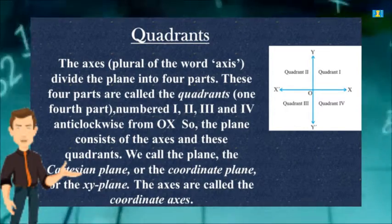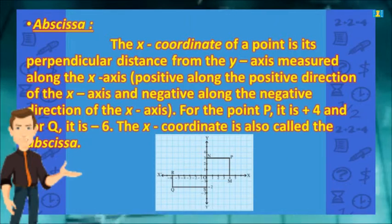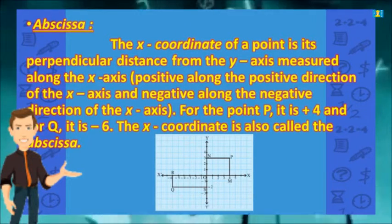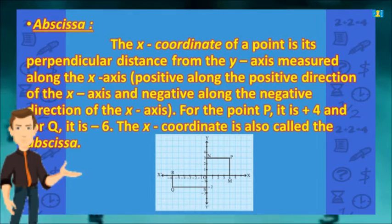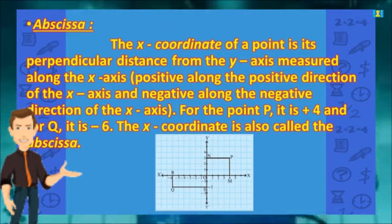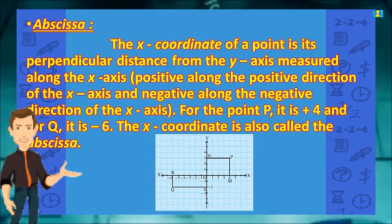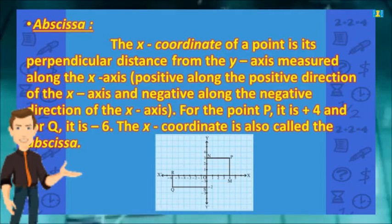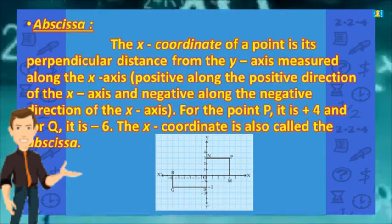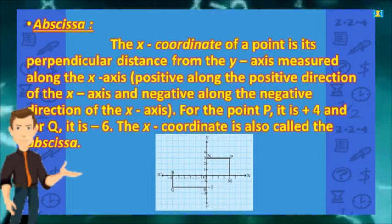The x-coordinate of a point is its perpendicular distance from the y-axis, measured along the x-axis — positive along the positive direction of the x-axis and negative along the negative direction of the x-axis.